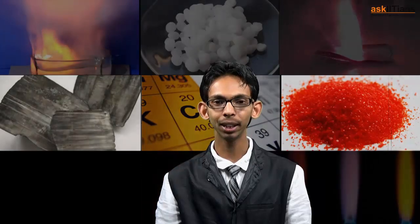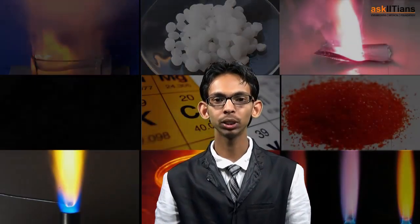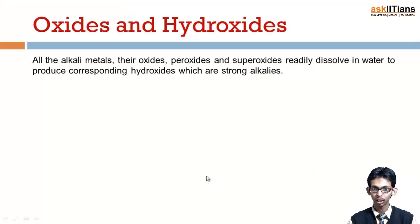Welcome back students. In this video we are going to study about the general properties of compounds of alkali metals. We'll see what type of compounds are found — what type of oxides, hydroxides, halides, and salts of oxo acids are formed by these compounds, and what their properties are. So let's begin with oxides and hydroxides of alkali metals.